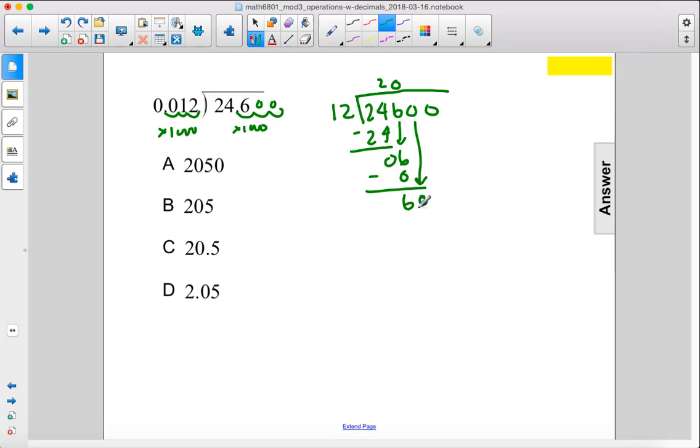We'll move a 0 down. 12 goes into 60, 5 times. 5 times 12 is 60. So we get nothing, and then bring down 0, and another 0. So our answer is 2050.